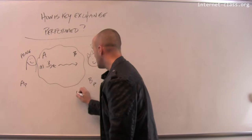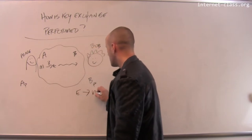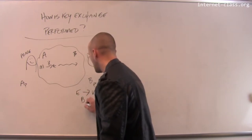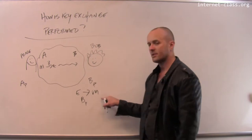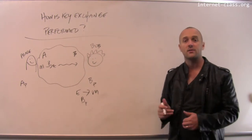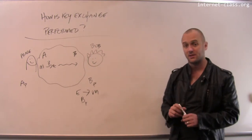And then Bob takes that message, uses his private key and decrypts it to recover the original message text. That's just standard public key asymmetric encryption.